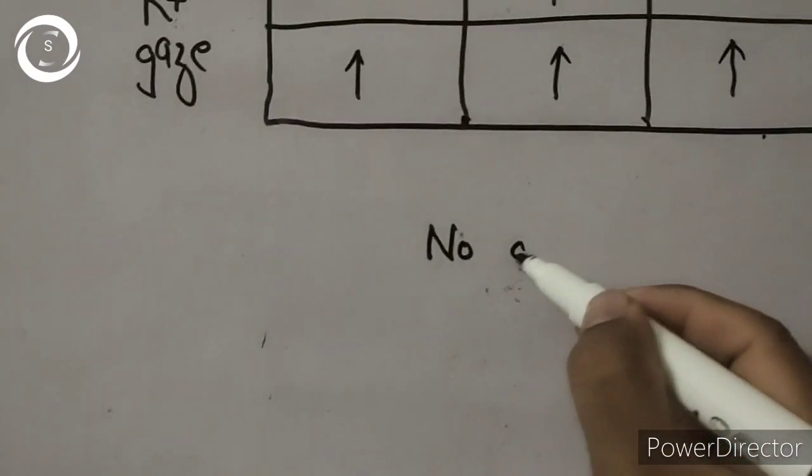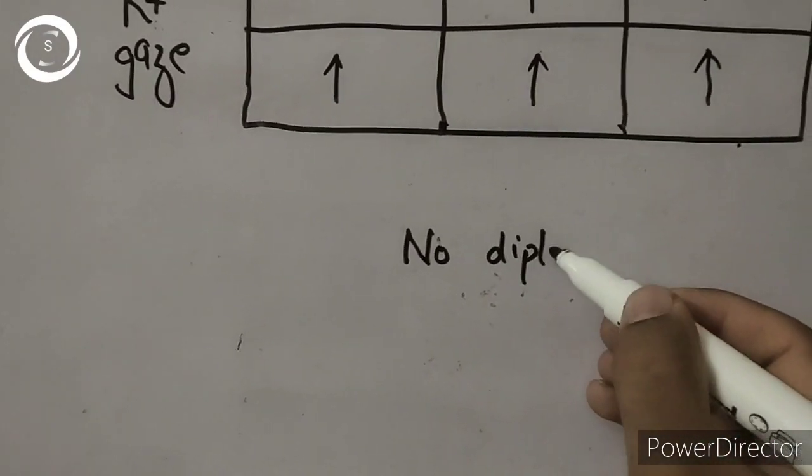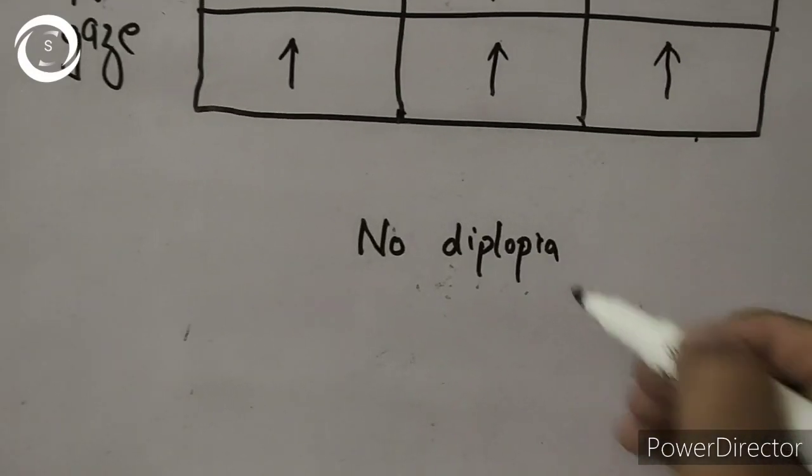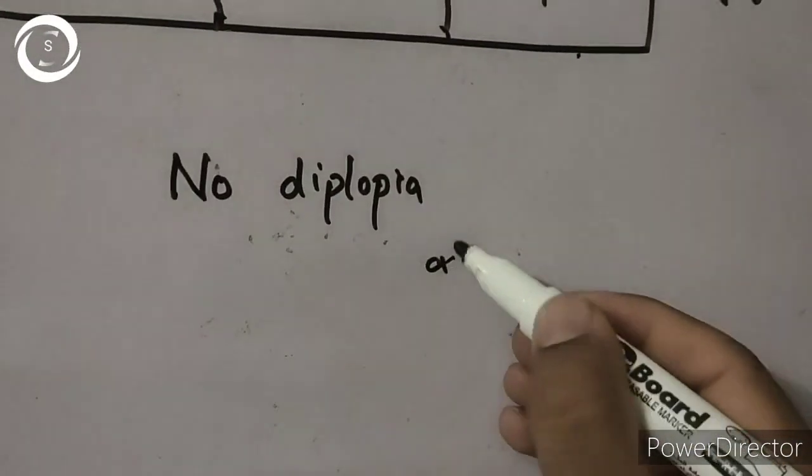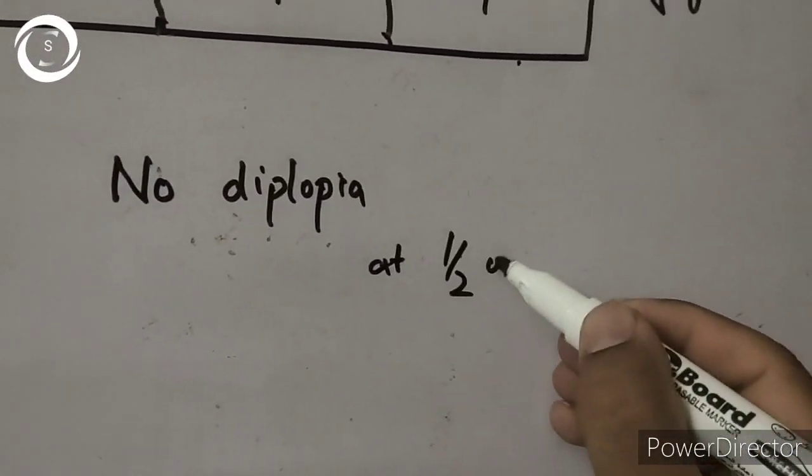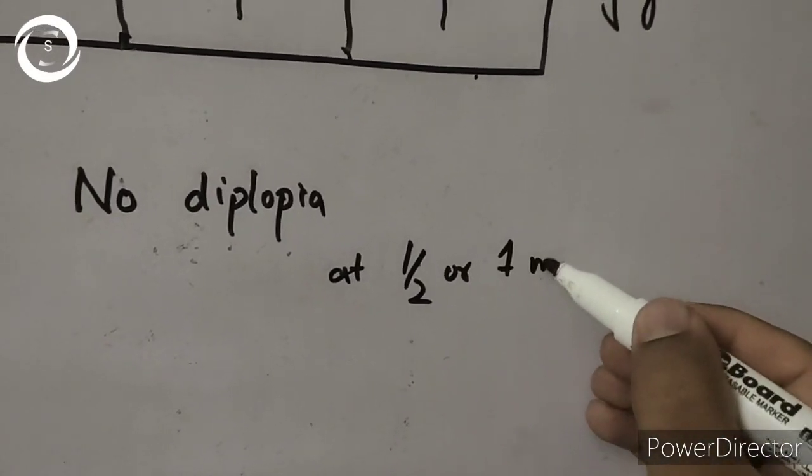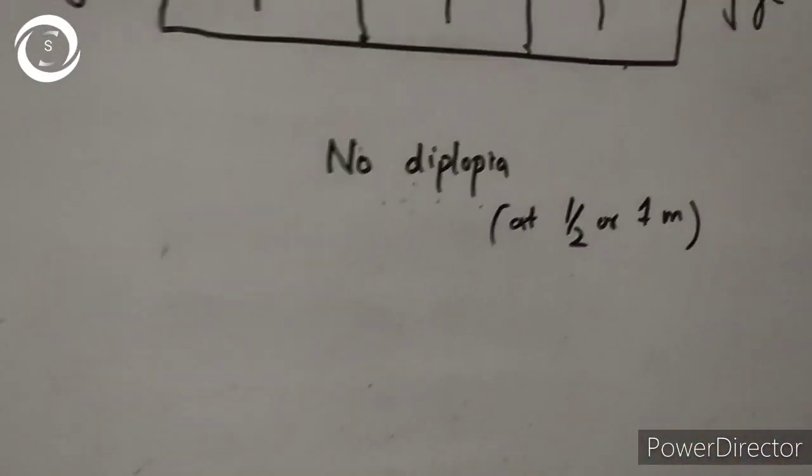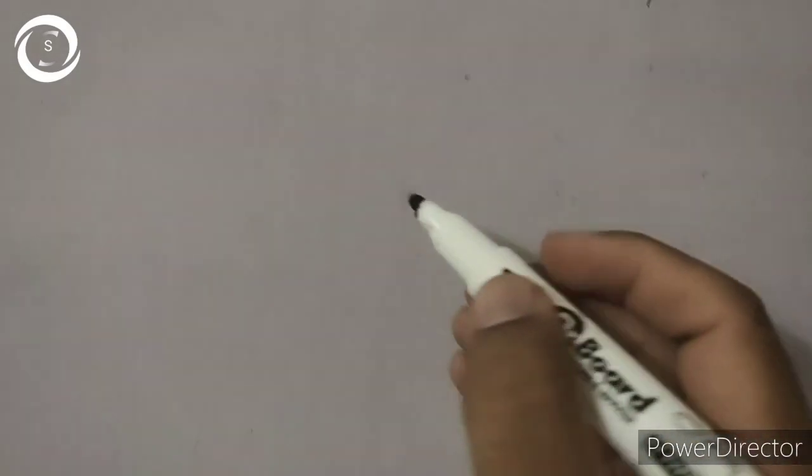So here now in the first patient we have plotted the chart, and patient sees single in all nine gazes. It means there is no diplopia. Patient may have comitant squint.